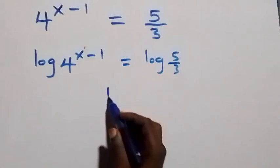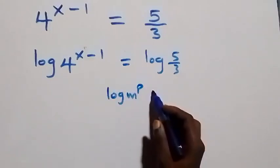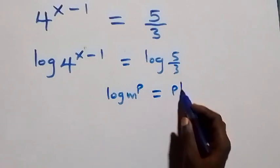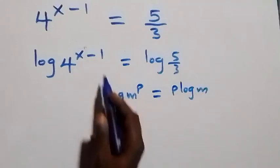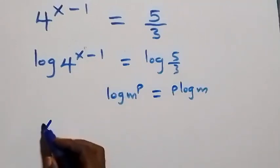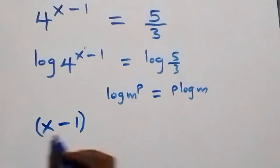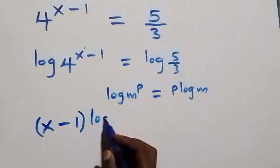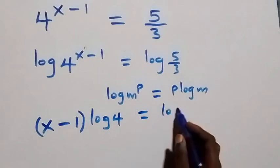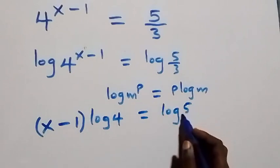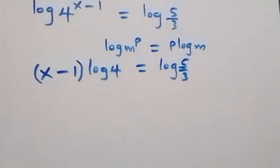From the power rule of logarithms, log m raised to power p is the same as p times log m. The power here is x minus one, so this becomes x minus one multiplied by log 4, which equals log of 5 over 3.